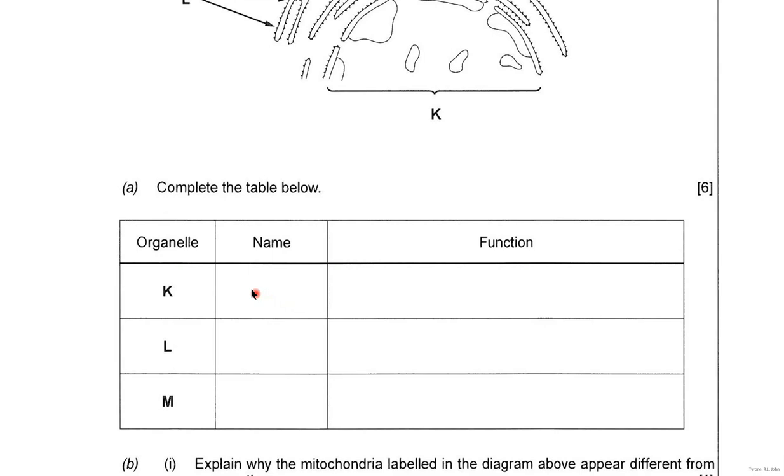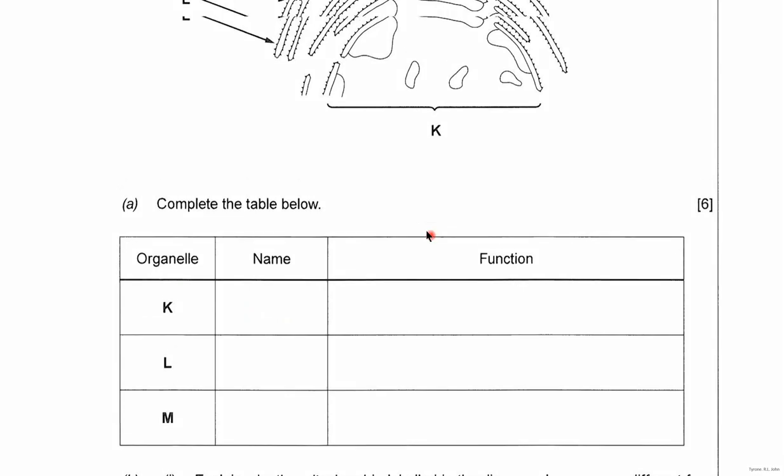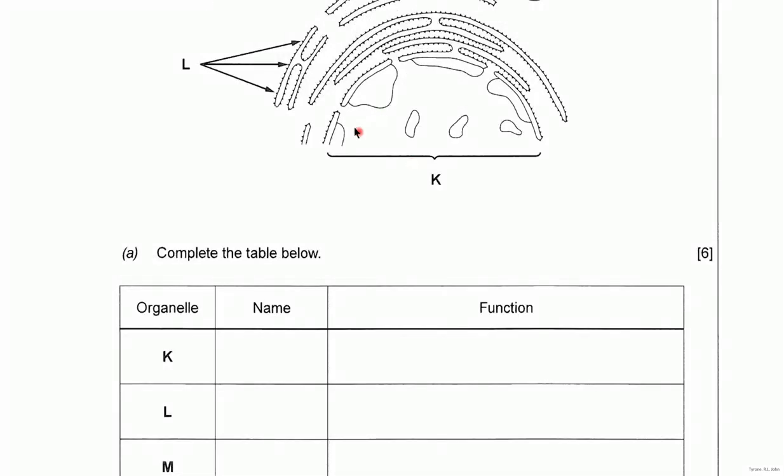So K, this is going to be the nucleus. Okay, so if you look at this sort of arc-like structure, that would show the membrane envelope of the nucleus. You can see it's a double membrane. And the outer membrane forms the rough endoplasmic reticulum. Okay, so K is going to be the nucleus.